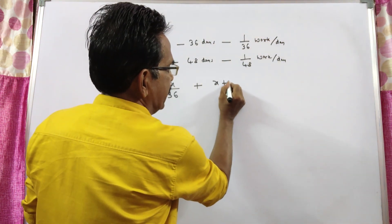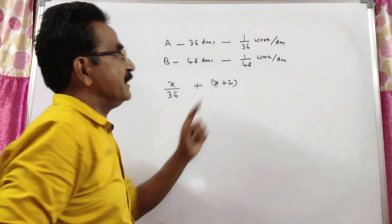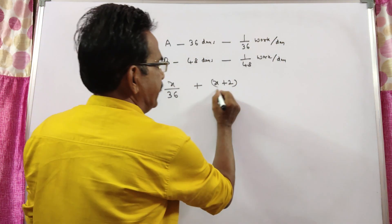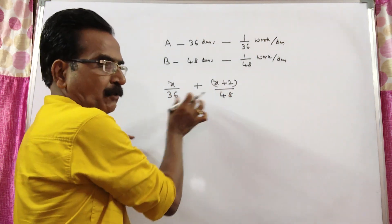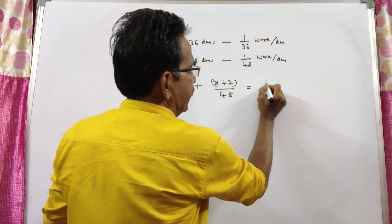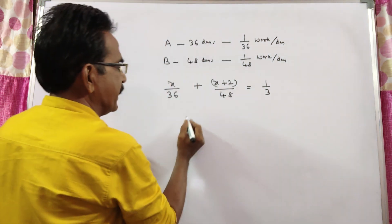So, in X plus 2 days, B works X plus 2 into 1 by 48. This is the work done by B, this is the work done by A. So, the total work done by A plus B is one third only.